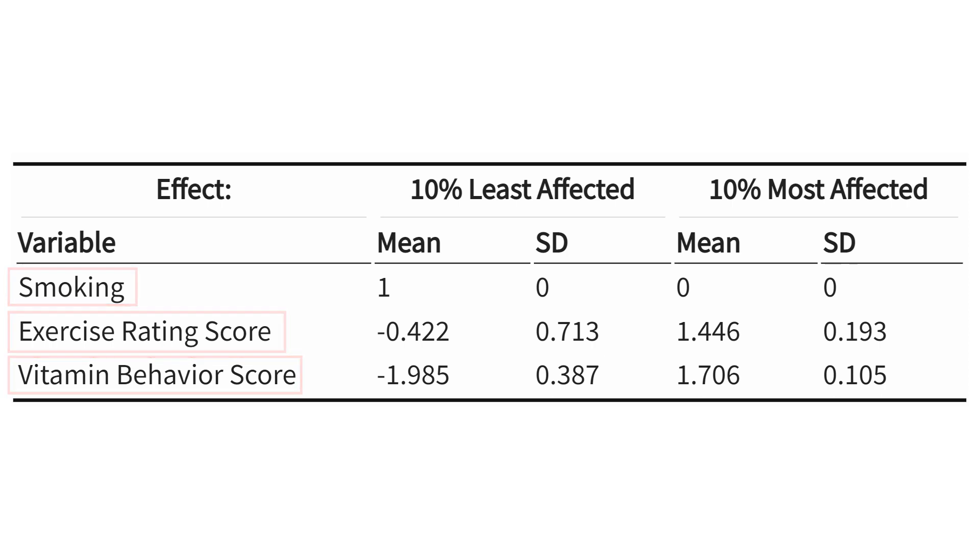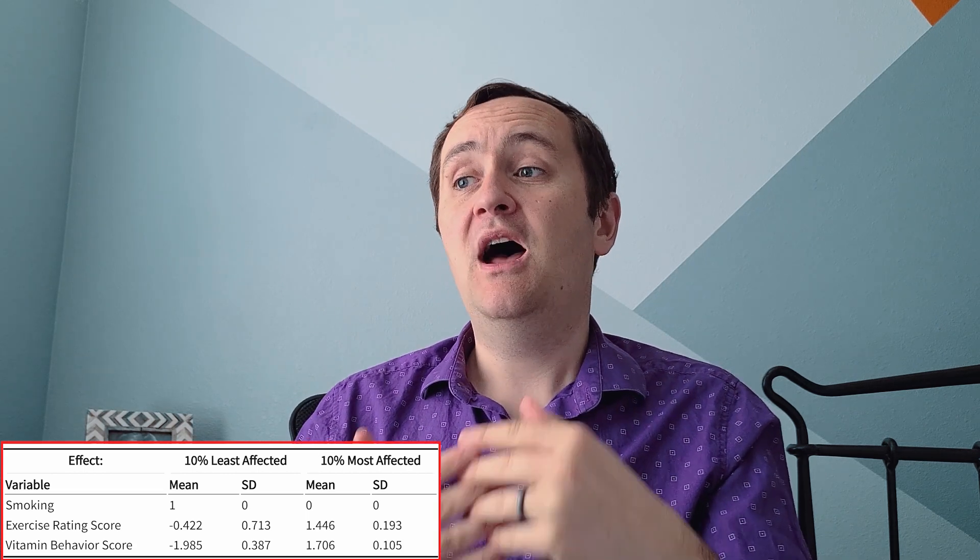You can look in the distribution of effects and see who sits in the most affected and least affected bins. Here, among people who do not respond to the vitamin E recommendation, 100% of them smoke, while among people who respond really strongly, none of them smoke. That's a big difference. This allows you to describe the kinds of people who respond strongly to treatment and those who don't, which is really important if you want to know not just what the effect of a policy is, but how that effect differs across different groups.